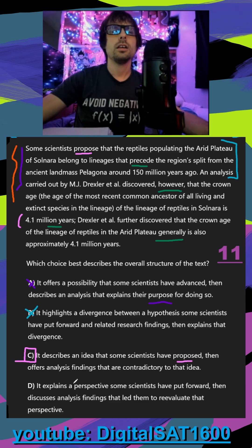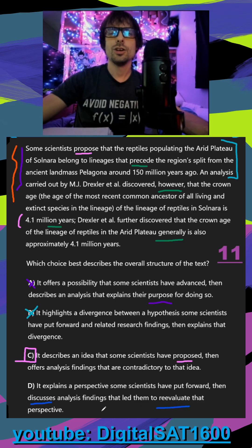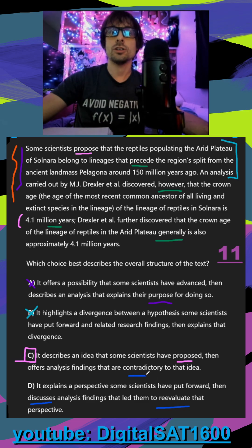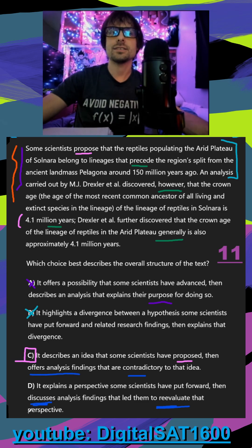In D, it explains a perspective some scientists have put forward — same as C and A, that part is right so far — then it discusses analysis findings that led them to re-evaluate that perspective. We can probably infer they want to re-evaluate because their findings were contradictory, but we don't actually see any re-evaluating nor them discussing the findings. They simply offered the analysis findings, so it's not going to be D either.